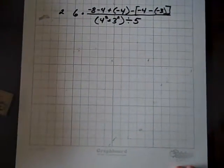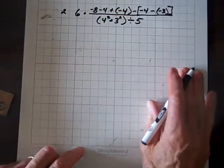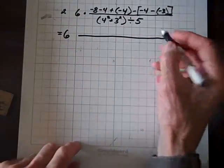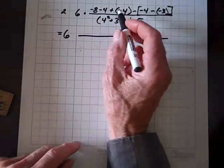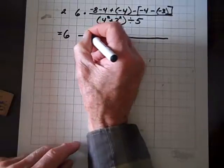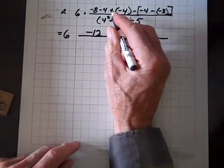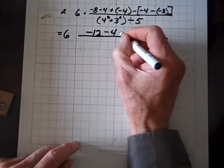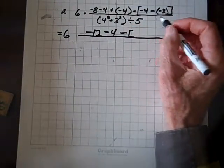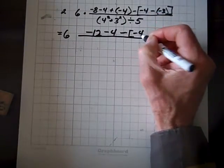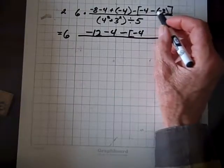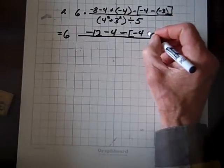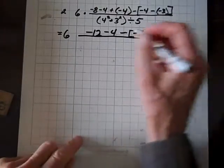Let's do another one — here's the second of our two problems. This equals six times this whole thing. Let's start up here: negative eight plus negative four — we can go ahead and combine those, that's negative twelve. Plus a negative four: positive times negative four is negative four minus. Now we have to go inside the brackets. We have minus four — nothing to do with that. But here we have a product, and we have to deal with multiplication before addition and subtraction. That's a double negative, so that's going to be plus three.